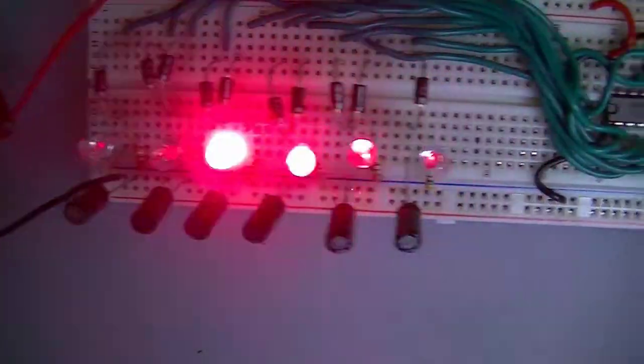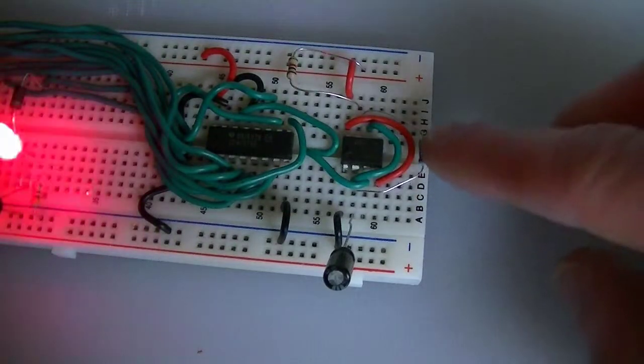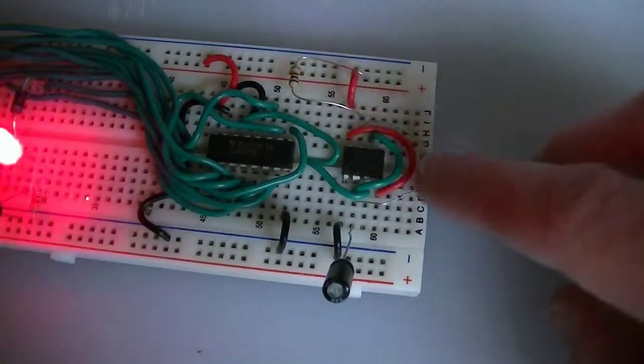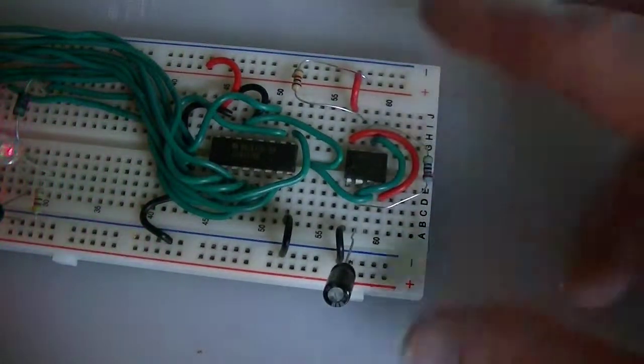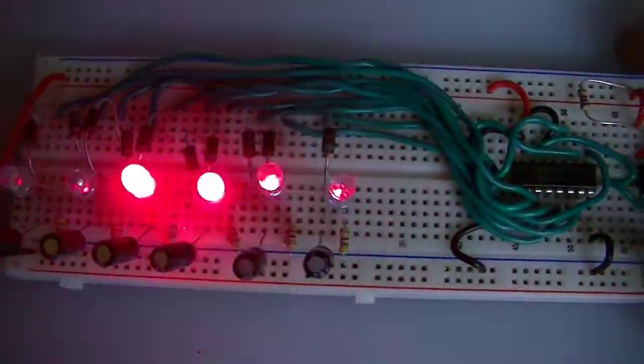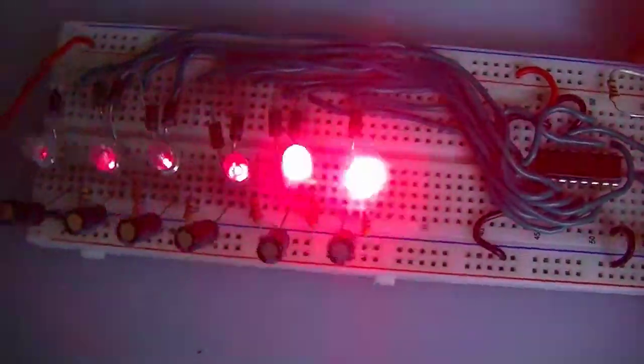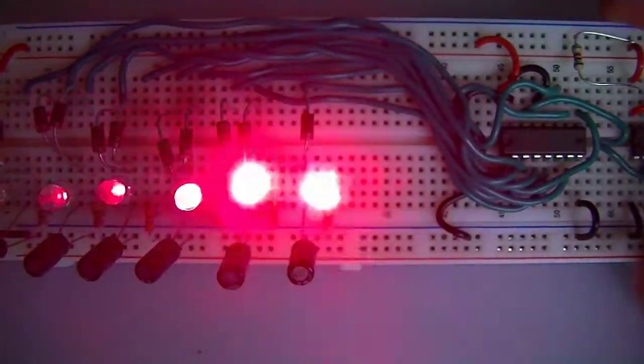You could even put a potentiometer in place of that there. Now this circuit's, you know, a fairly good amount of wiring and it'd be a bit difficult to make a PCB for, but you can do it. There are better ways of doing a circuit like this—for instance, you could use a microcontroller and you'd have more pins available so you could have a much larger array of LEDs.